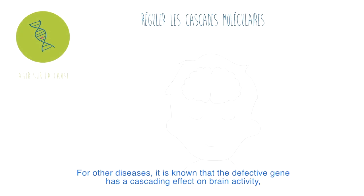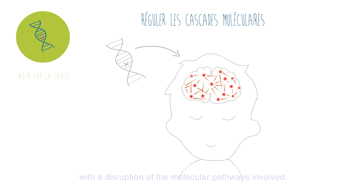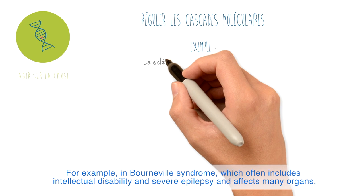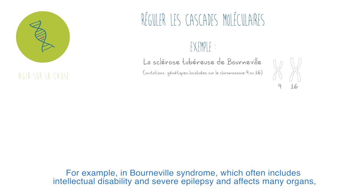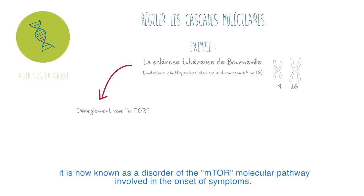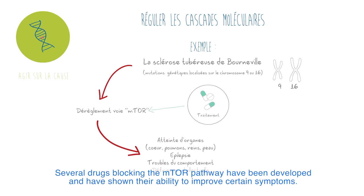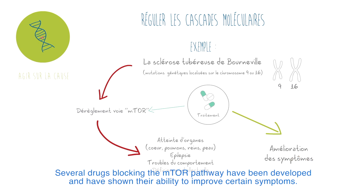For other diseases, it is known that the defective gene has a cascading effect on brain activity, with a disruption of the molecular pathways involved. For example, in Bourneville syndrome — which often includes intellectual disability, severe epilepsy, as well as affects many organs — it is now known as a disorder of the mTOR molecular pathway involved in the onset of symptoms. Several drugs blocking the mTOR pathway have been developed and have shown their ability to improve certain symptoms.